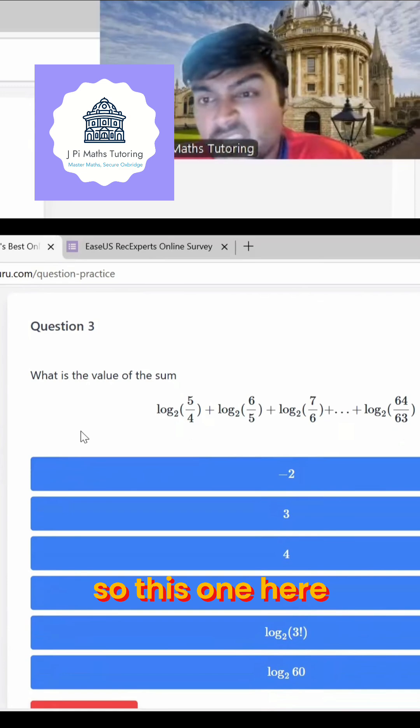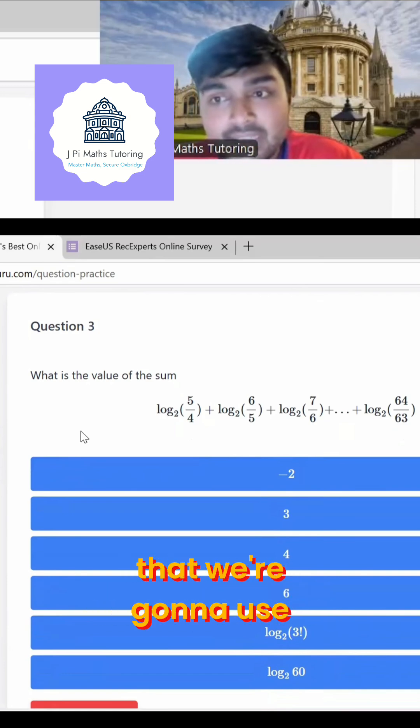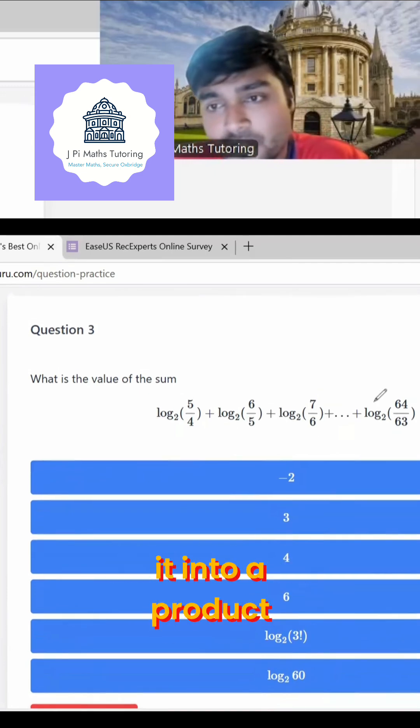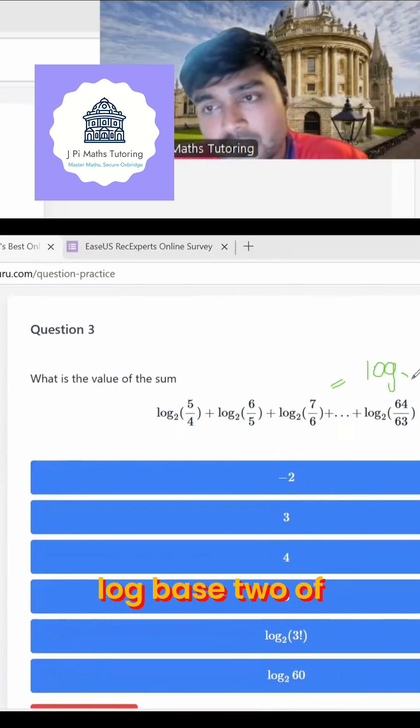So this one here, looks pretty self-explanatory. We're going to use the log rule, the addition rule. It means we can kind of bring this all into one logarithm and turn it into a product. So this is here log base two,